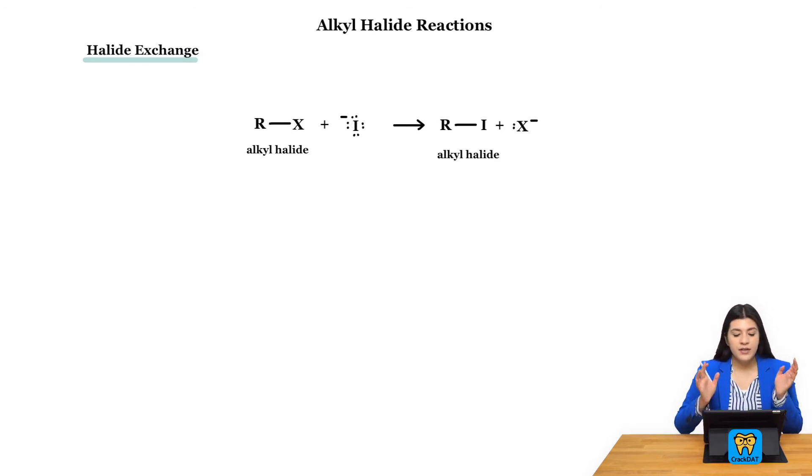We could also see this type of exchange or swapping with another type of halogen. So this is a halide exchange where we have our alkyl halide and let's say this is a different type of halogen.